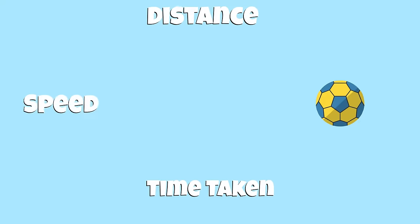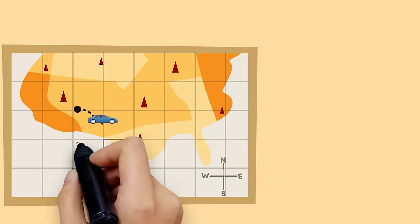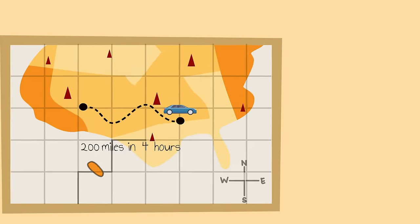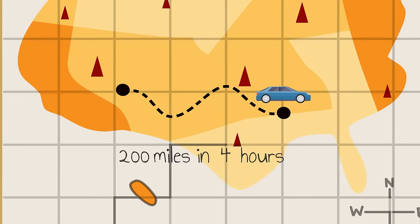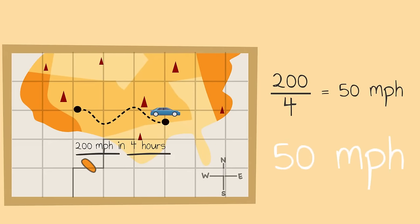The formula is S equals D divided by T. For example, a car that traveled 200 miles in 4 hours was traveling at a speed of 50 miles per hour. We simply divide the total distance, which is 200, by the time, which is 4 hours. 200 divided by 4 is 50. The car traveled at 50 miles per hour.